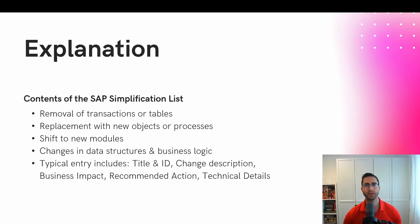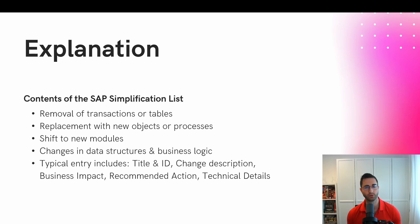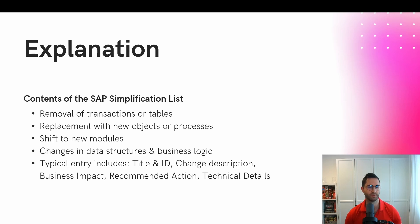What is the content of an SAP Simplification List? Especially when moving from SAP ECC to SAP S4HANA, many transactions, tables, data elements, and so on are obsolete and have been removed. This means you may need to adapt your coding, your processes, and learn new structures. All removed transactions or tables are listed, and the replacement objects are also mentioned. If there is a shift to new SAP modules, that will be explained as well, including any changes to data structures or business logic.